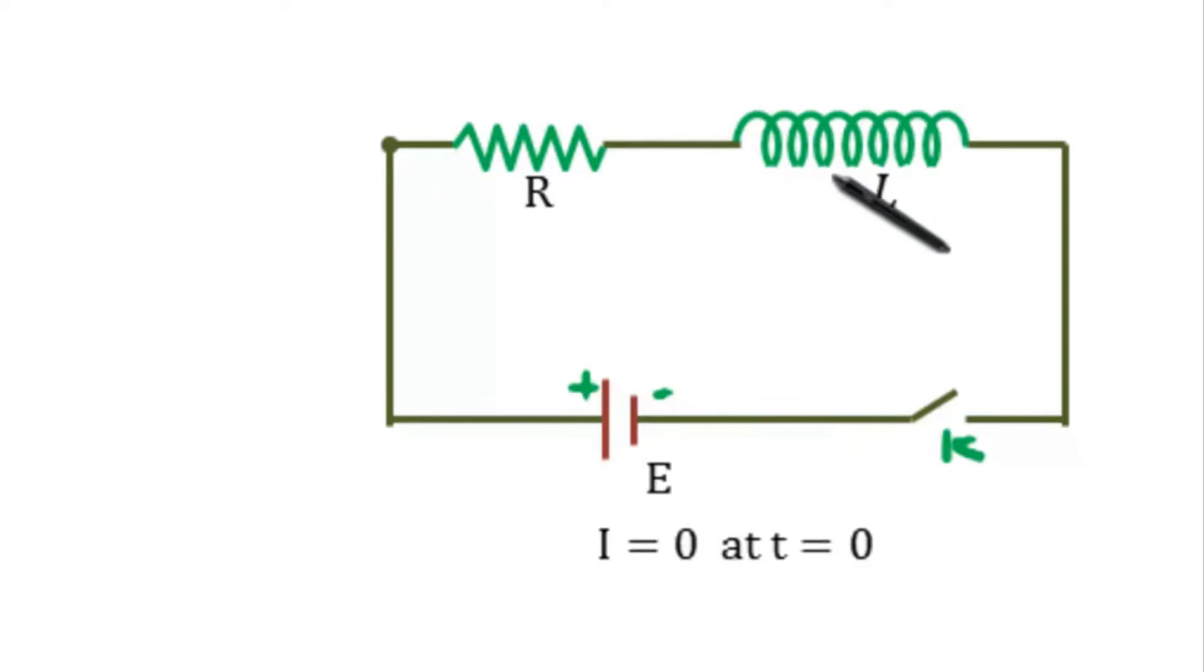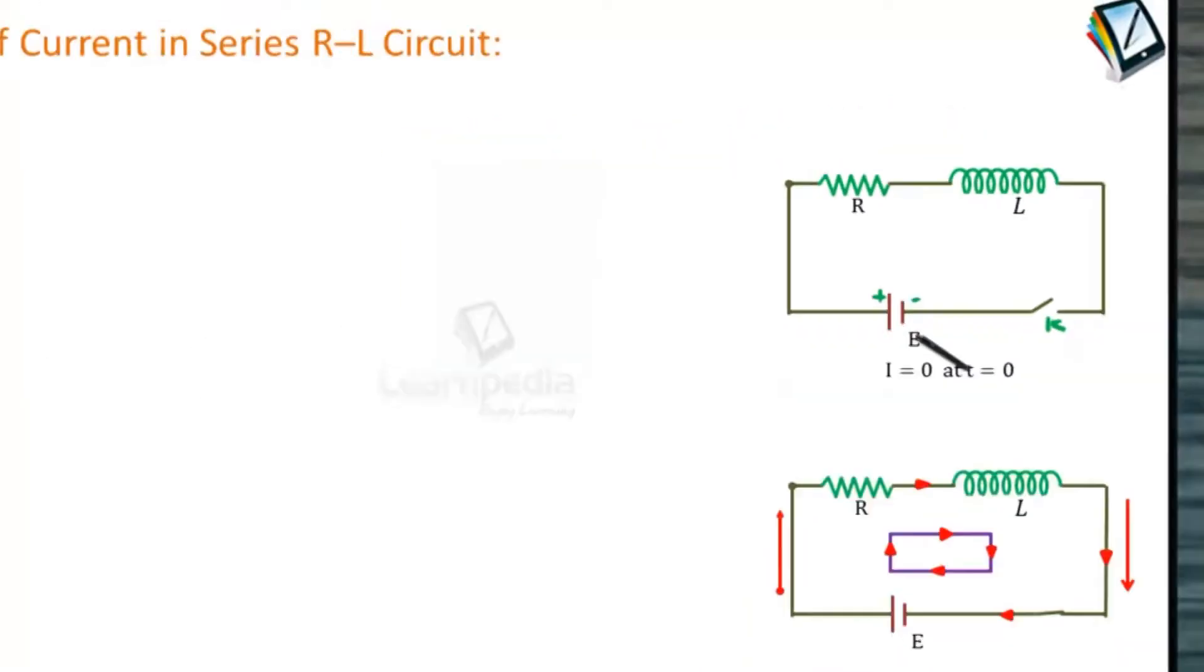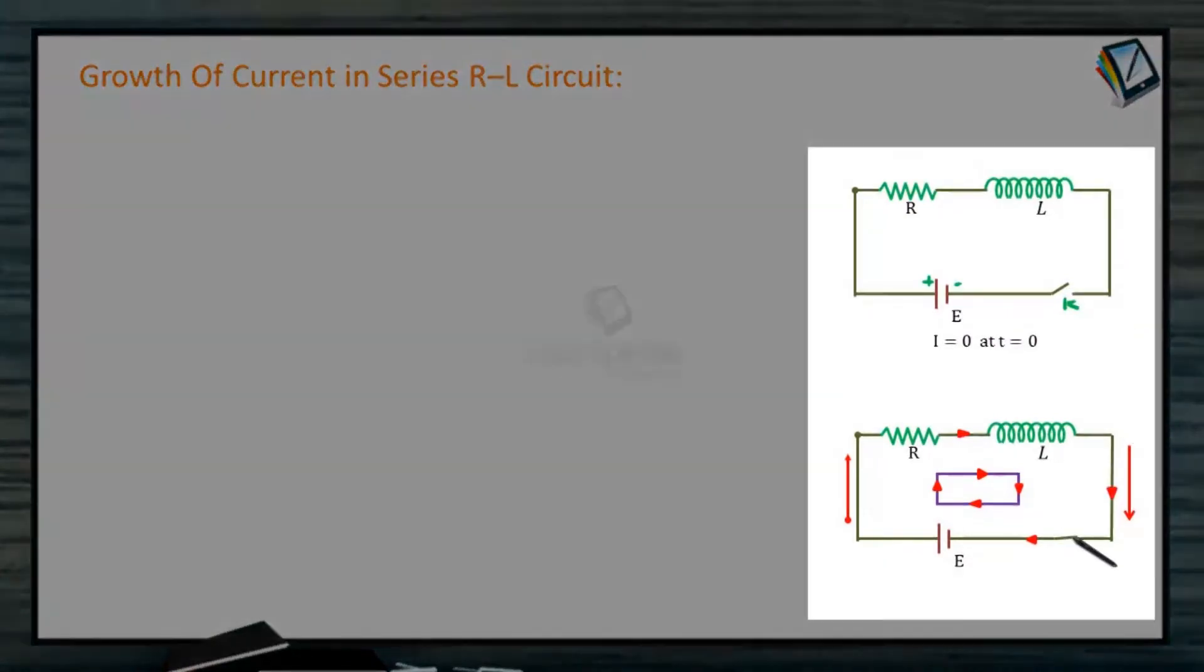Consider a circuit having an inductor and resistor in series with a direct source of EMF E. As soon as the switch is closed, the current in the resistor starts increasing. If the inductor was not present, the current would rise rapidly and immediately the steady-state current would reach E by R, by Ohm's law.